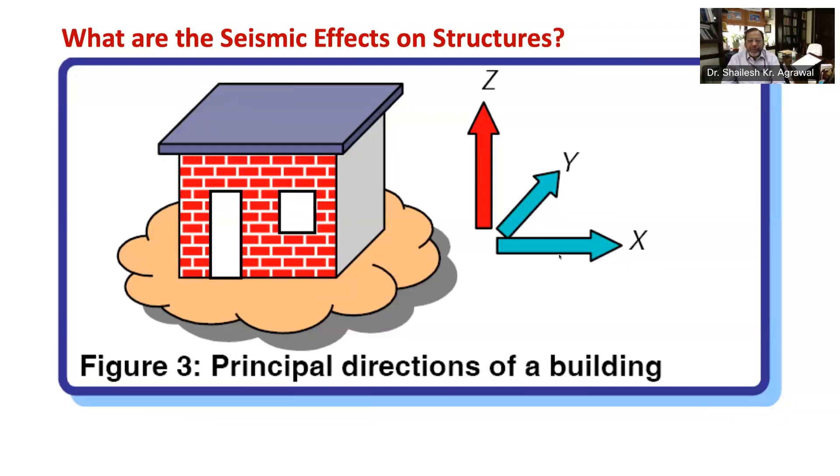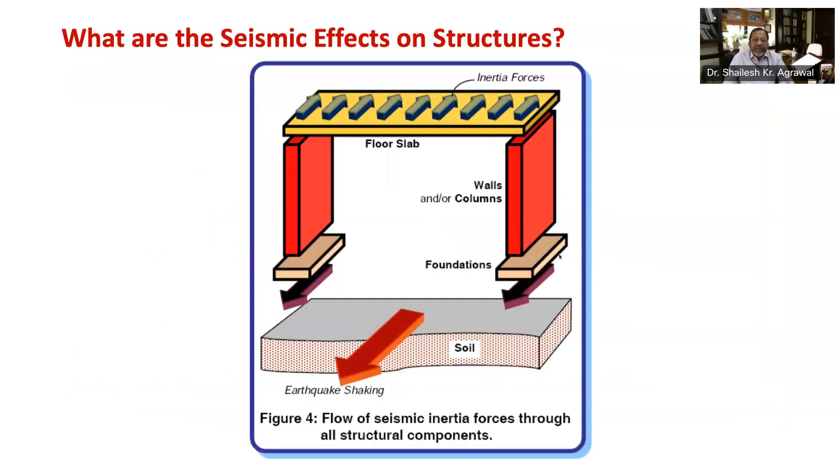Let's move to the horizontal inertia force, which is generated at the level of mass of the structure, usually at the floor level. These horizontal and lateral inertia forces are transferred by the floor slabs to the beams, walls, and columns, and then to the foundation, and finally to the soil. Therefore, each of the floor slab, beams, walls, columns, and foundations, and the connections between them must be designed to safely transfer these horizontal inertia forces through them to the ground. That is the philosophy of flow of earthquake forces.